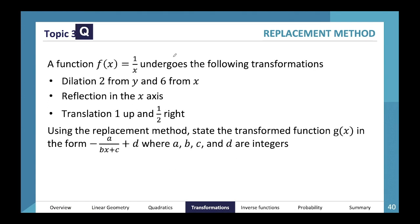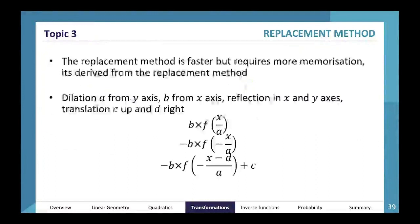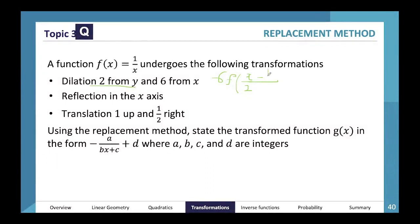The first thing to note: dilation from y means I apply one-over-a to x, so I apply x over two. Dilation of 6 from the x-axis means I do 6 times f(x) applied to y. Reflection in the x-axis is applied to y, so I put a negative in front. Translation one up and one-half right: since it's right I subtract one-half from x, and since it's up I add one. So the expression becomes: minus 6 times f(x − one-half), then plus one.